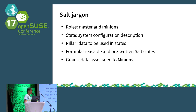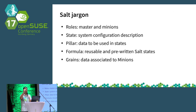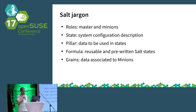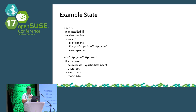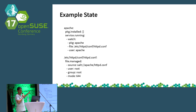Formulas are reusable states that can interpret information from pillars. For example, you can use a formula to install a PostgreSQL server, define a pillar with options like a different port or data directory, and configure the state. Grains are data associated with those minions — usually information from the underlying systems, but you can also set custom grains. Here's a simple example: a state to install an Apache server, install a package, make sure the service is running, and write the configuration file. Just take the general idea.